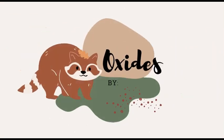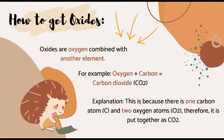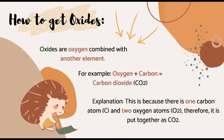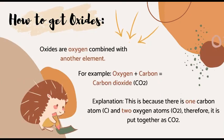The first compound we will be learning about today are oxides. So, how would you get oxides? Oxides are oxygen combined with another element. For example, oxygen plus carbon equals carbon dioxide. This is because there is one carbon atom, which is represented by C, and two oxygen atoms, which is represented by O2. Therefore, it is put together as CO2.